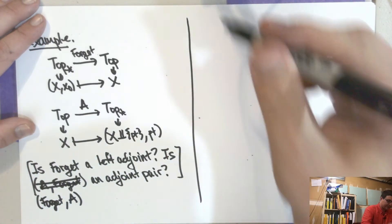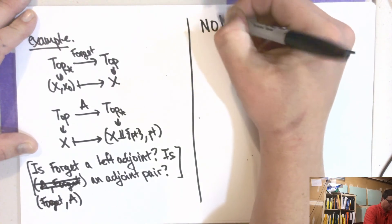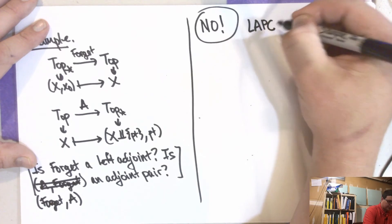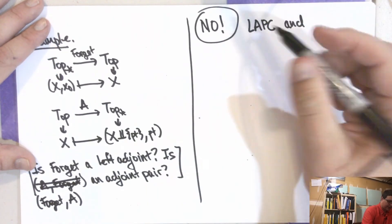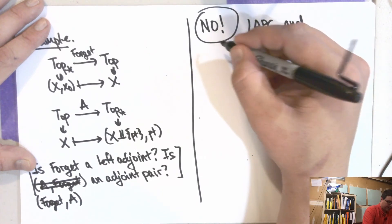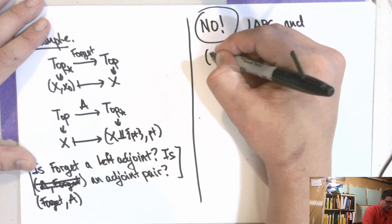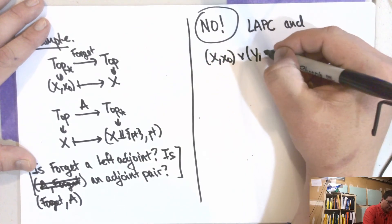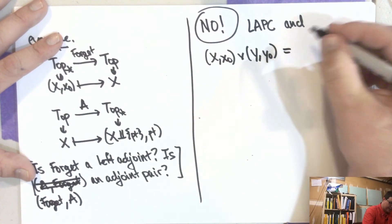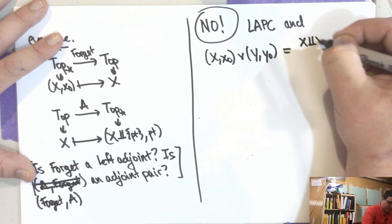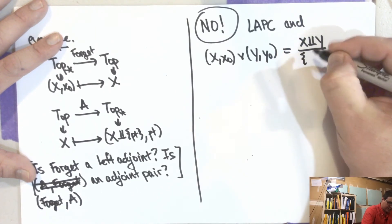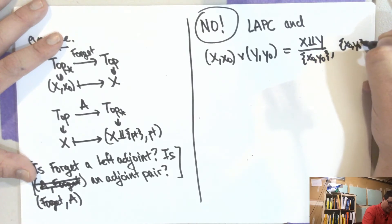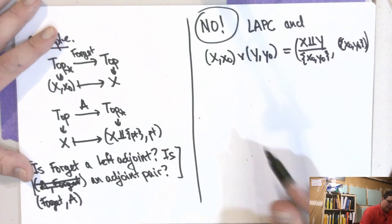Left adjoints preserve co-limits. The answer is no. Here, if we take the wedge product — so the co-limit of (X, x₀) wedge (Y, y₀) — this looks like X disjoint union Y, and then we quotient by identifying the two basepoints into a single point. That's what the wedge product is.